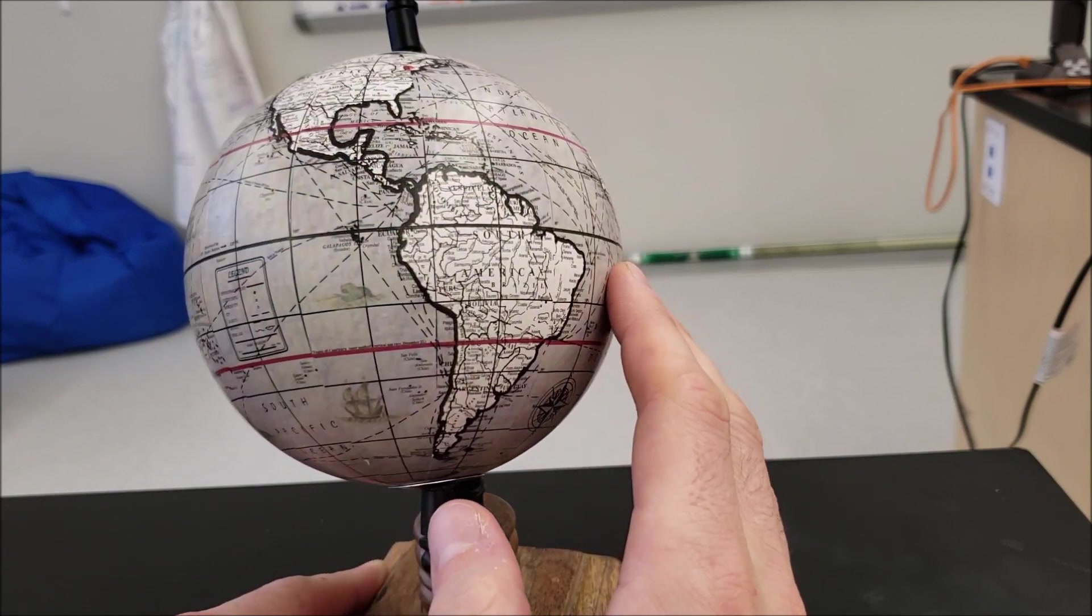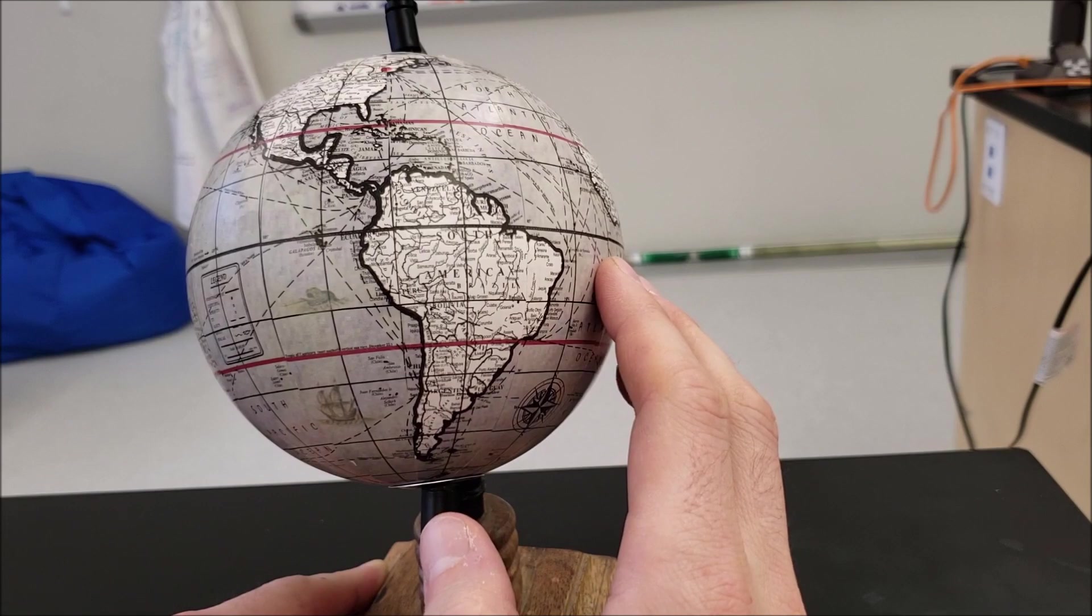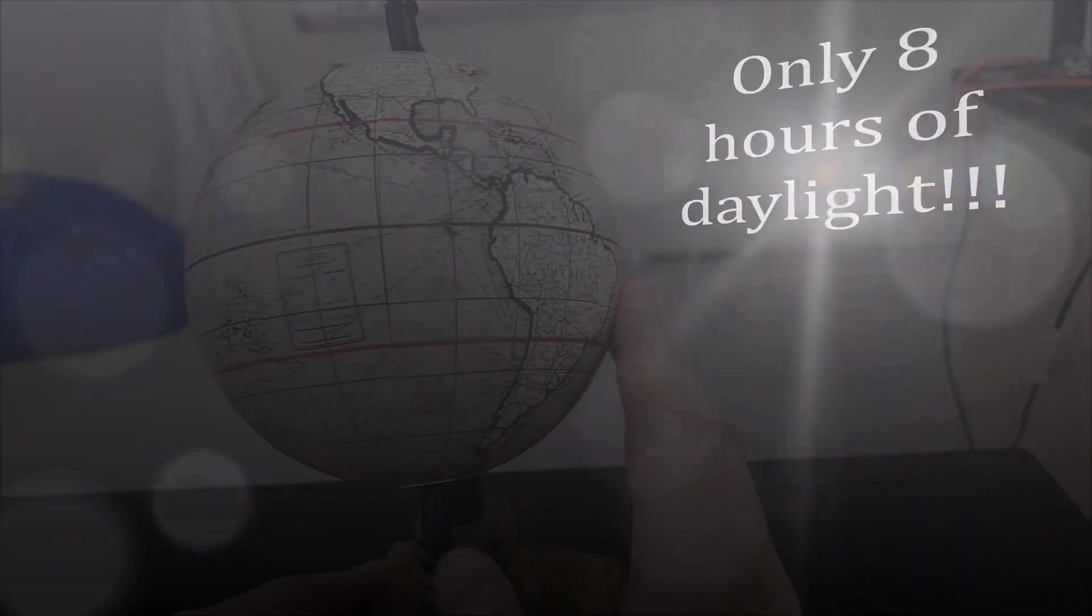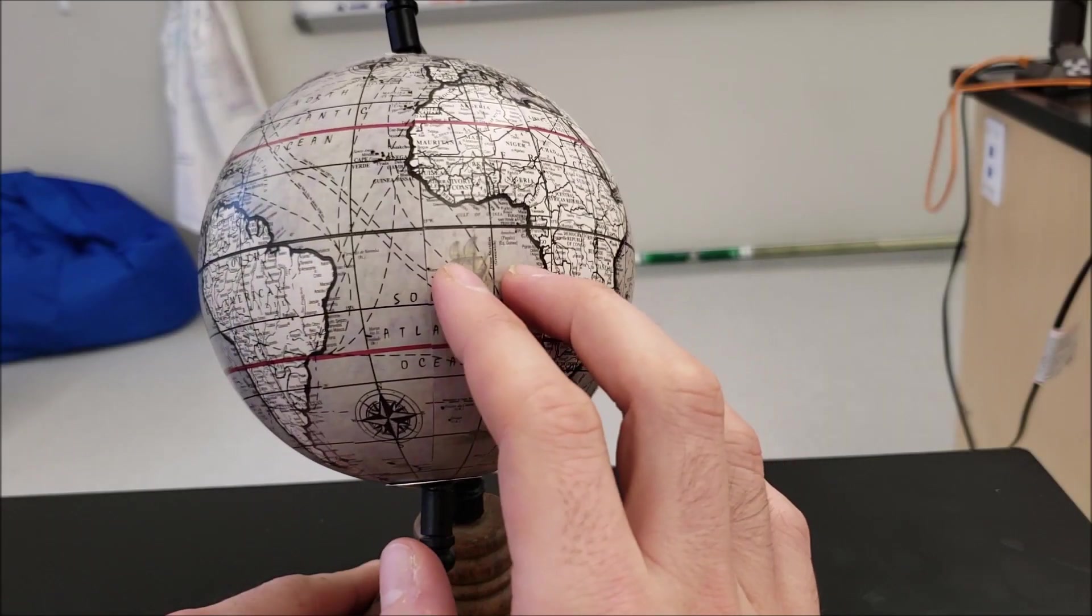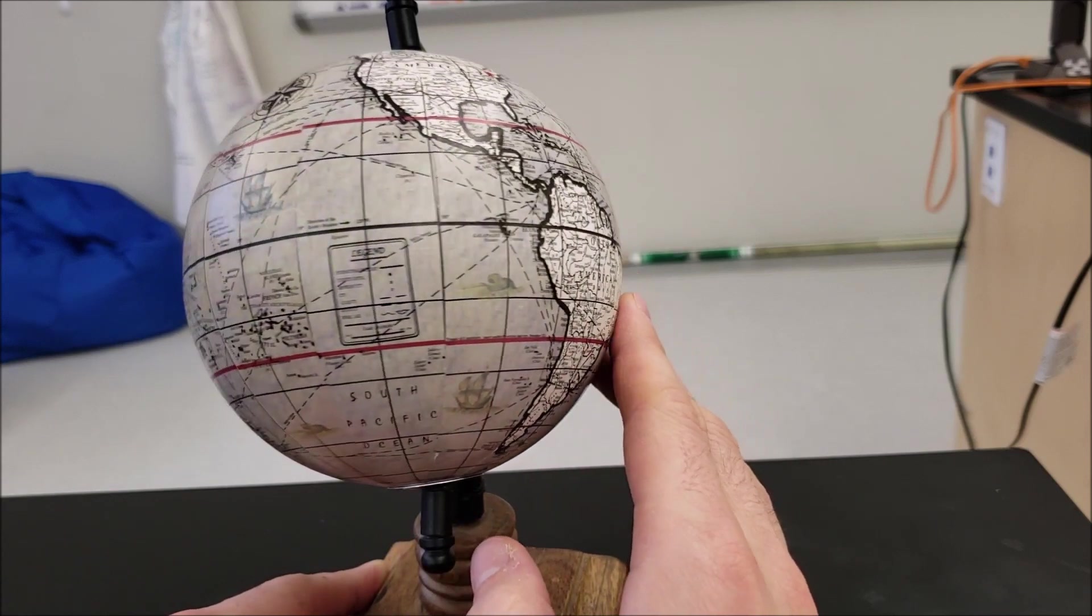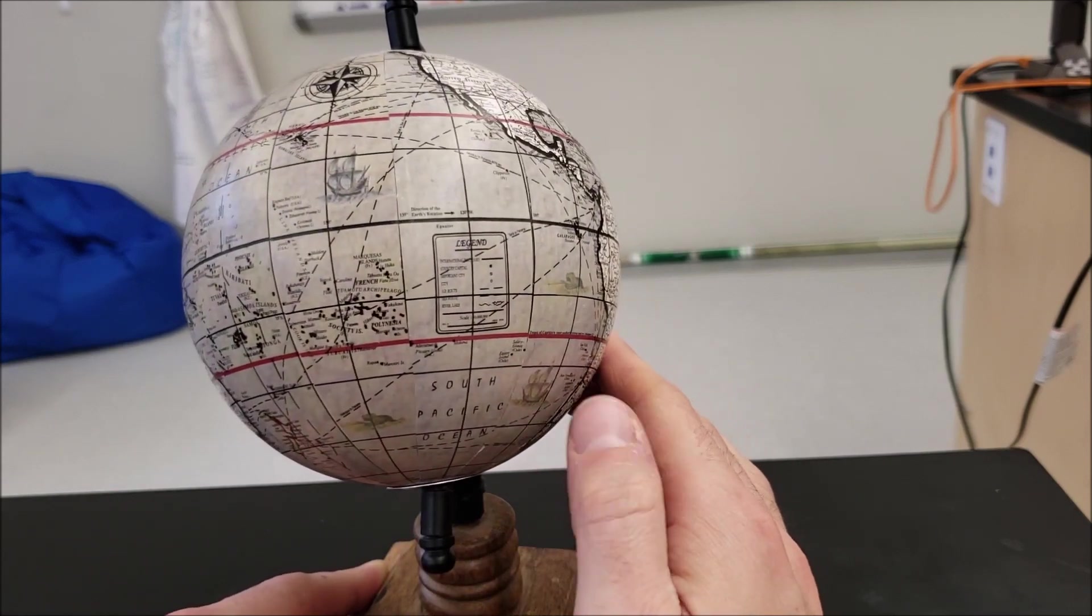So this is why we don't get a lot of daylight in the wintertime. So what this model is showing is only about eight hours. Four plus four. About eight hours that that dot is above the horizon.